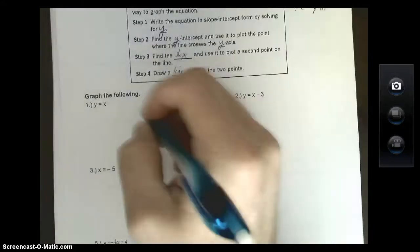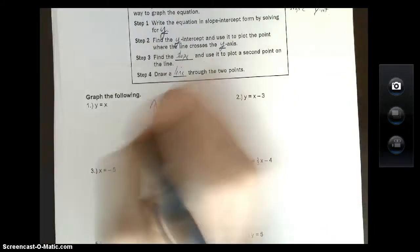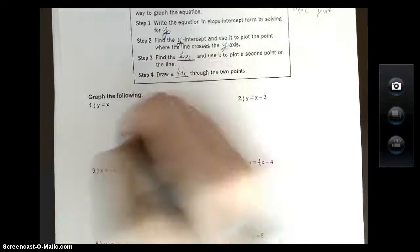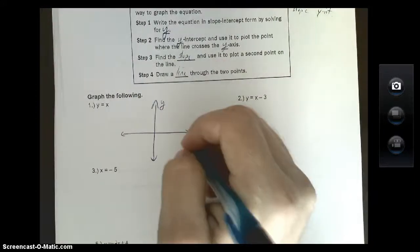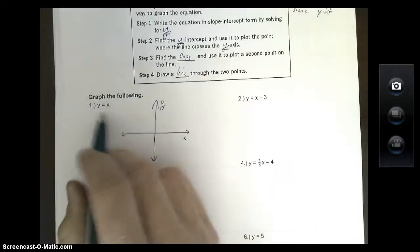We're going to take a look at our first example. Graph the following equation. Here's my xy-axis. Going up and down is always your y. Going side to side is your x.